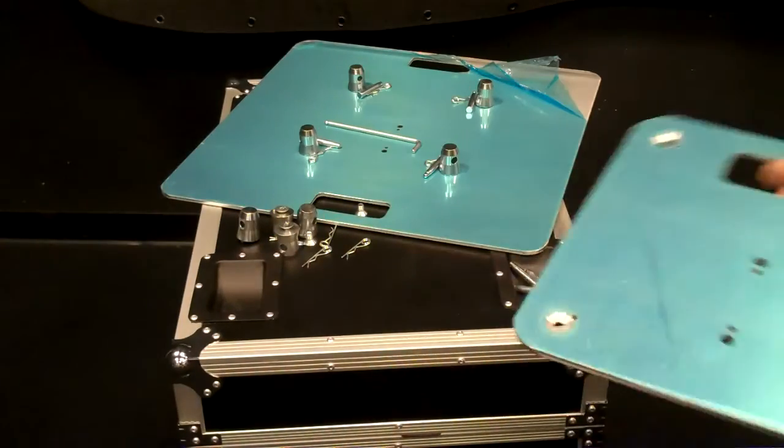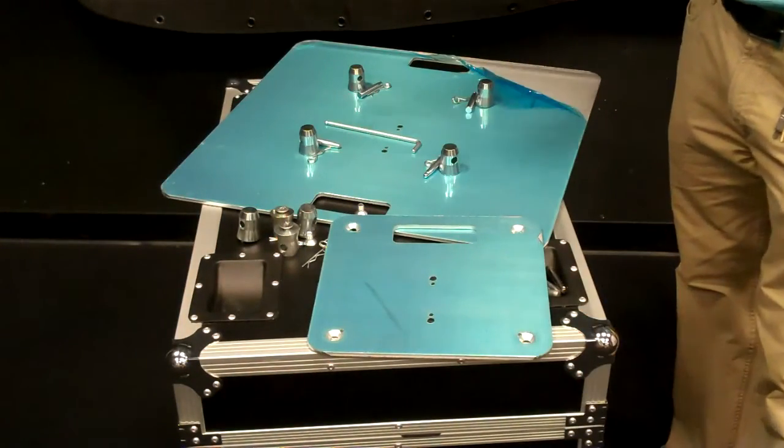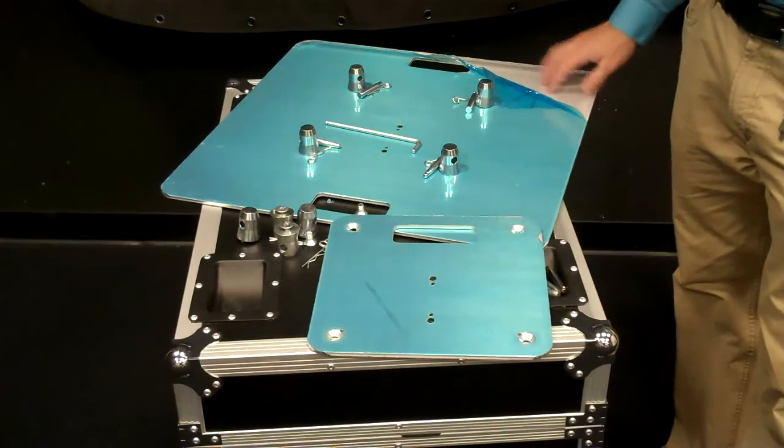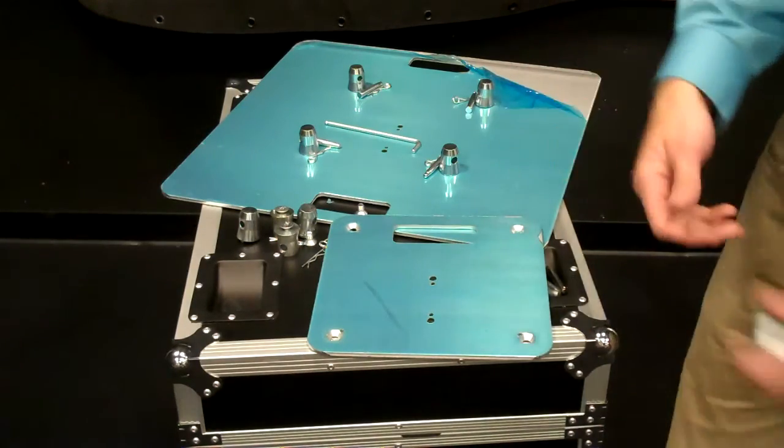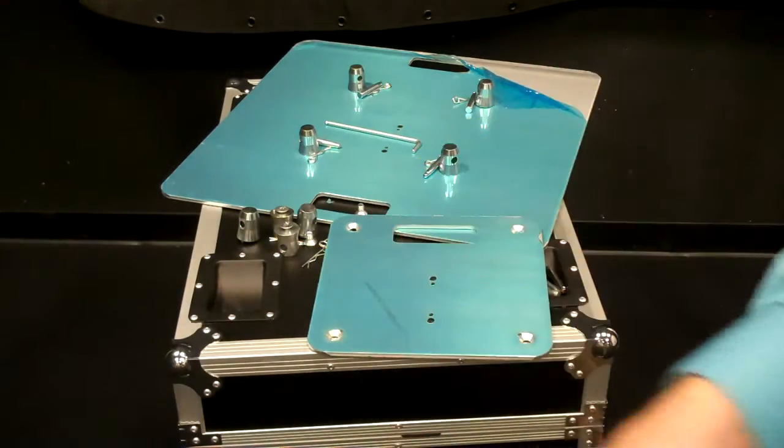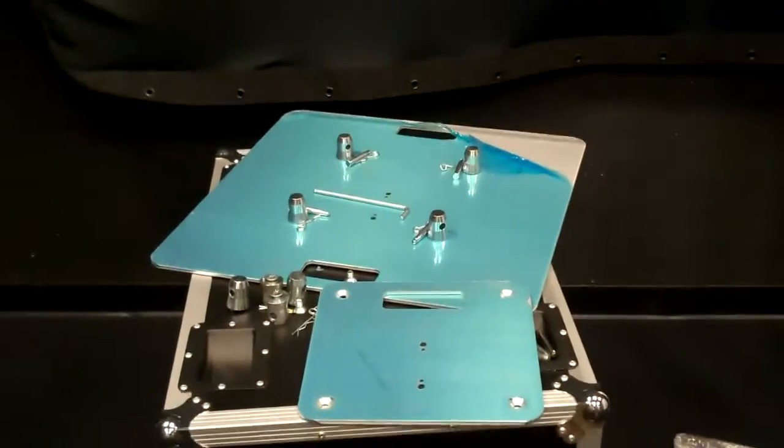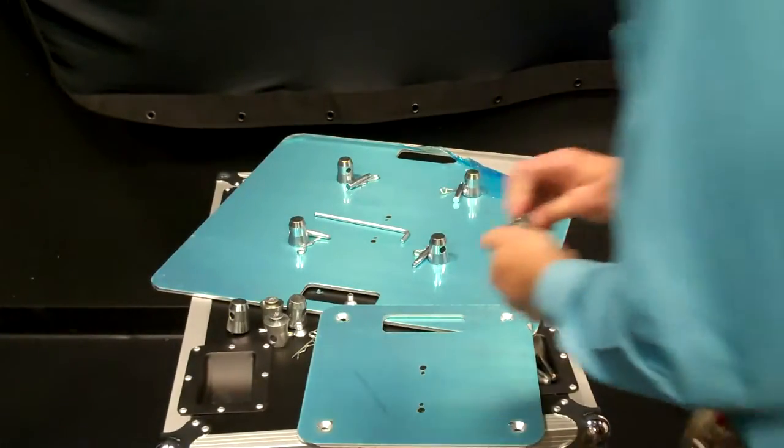You see this blue film that's on there. This blue film is basically just to protect this so it's not scratched up when it arrives to you guys. As you can see here, this blue film will just peel right off and then you've got that nice aluminum look.